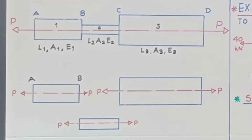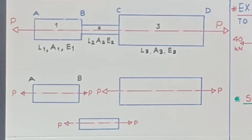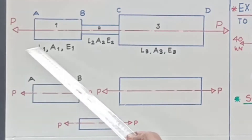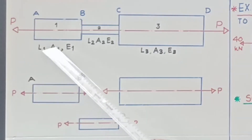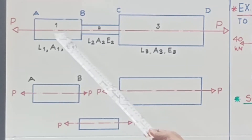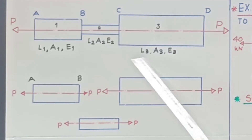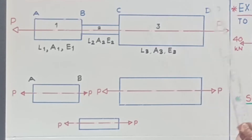This bar ABCD is subjected to an axial force or axial load P. Here, L1 is the length of part number 1, A1 is the cross-sectional area of part number 1, and E1 is the modulus of elasticity of the material of part number 1. Similarly, L2, A2, E2 for part number 2, and L3, A3, E3 for part number 3.